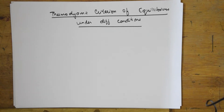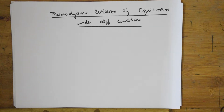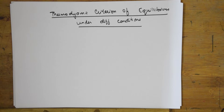Welcome students to one more session of Chemical Thermodynamics. We have almost come to the last topic of the chapter. In the previous video, I taught you what is Gibbs energy, what is Delta G naught — that is standard Gibbs energy — and I showed you the relation between Delta G and Delta G naught.